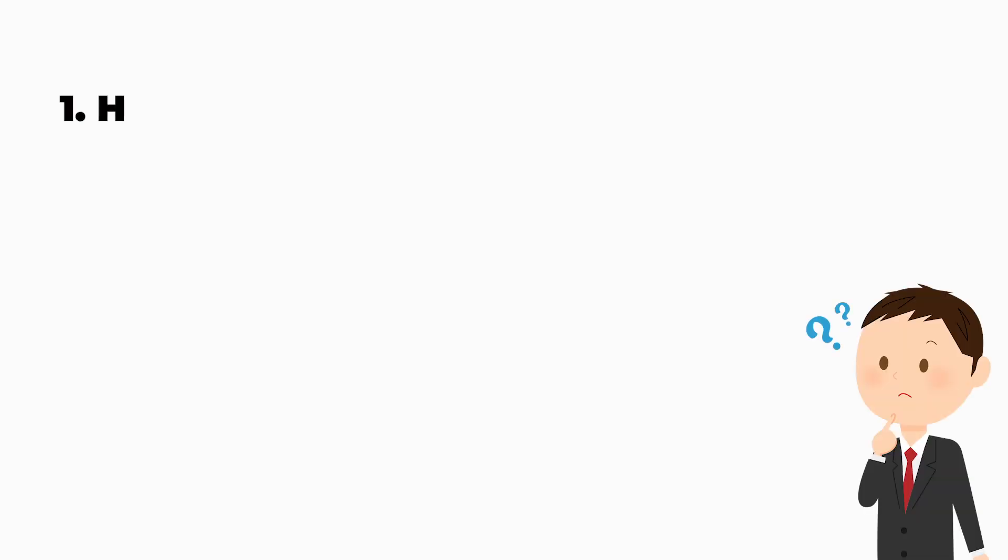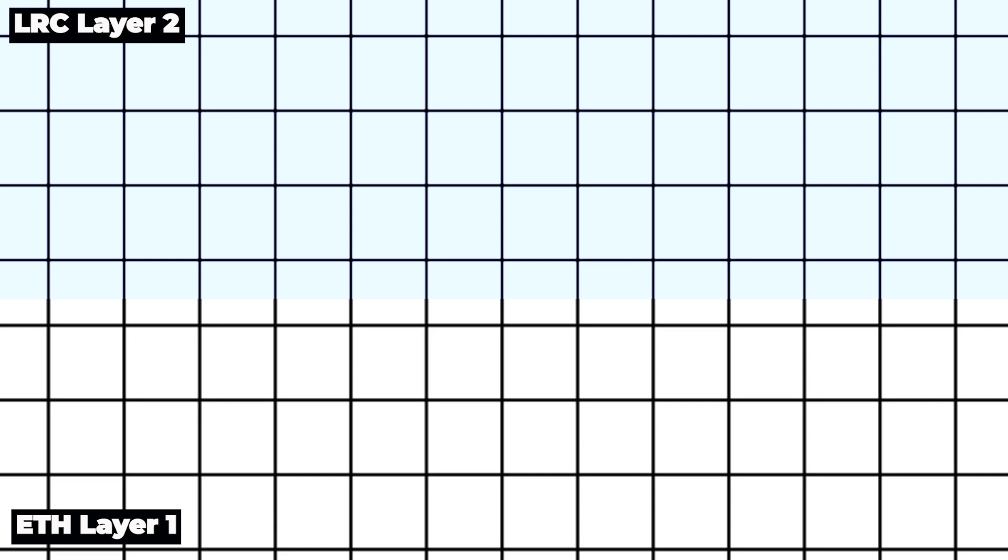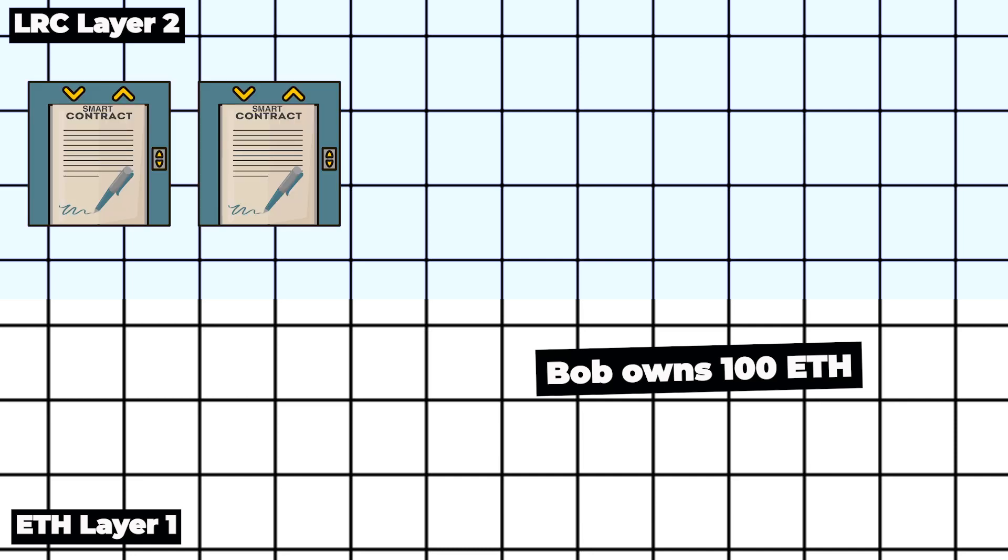Now that you hopefully understand the structure, let's answer the first question about how the computation of transactions can be moved off of the Ethereum blockchain. When you own 100 Ether, it technically means that there is a record on the Ethereum blockchain layer 1 that you indeed own 100 Ether.